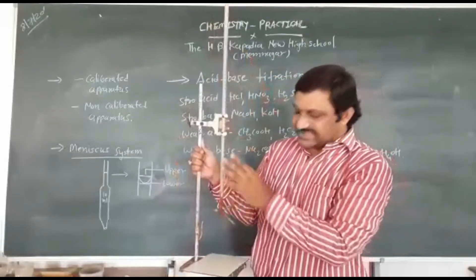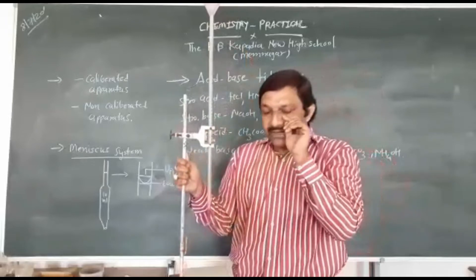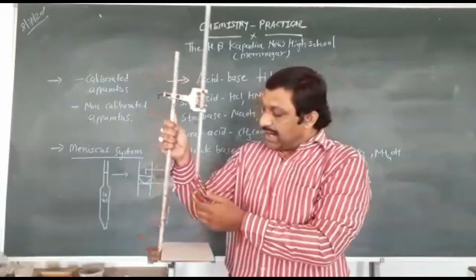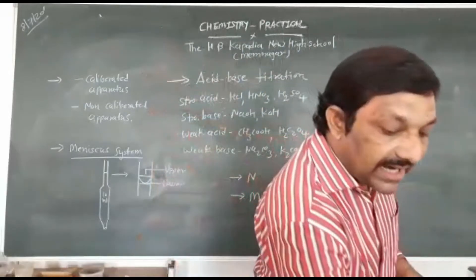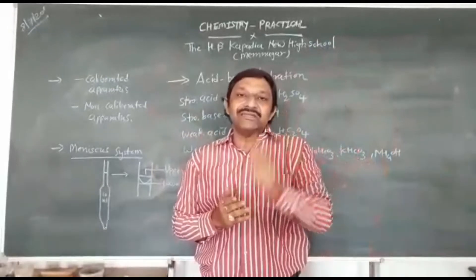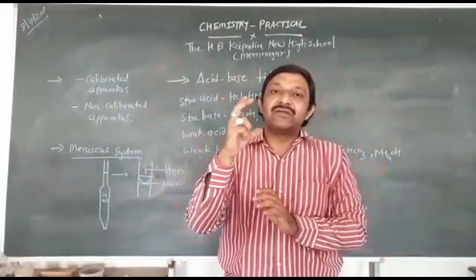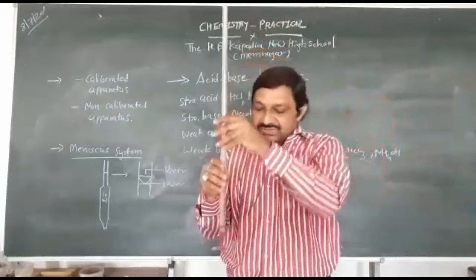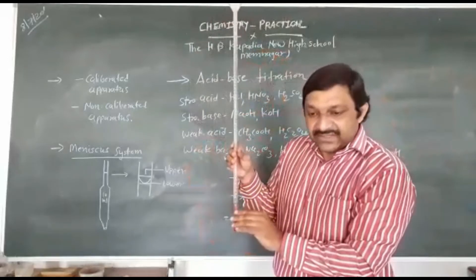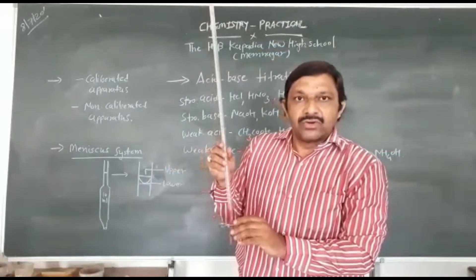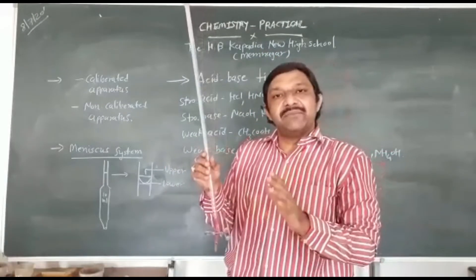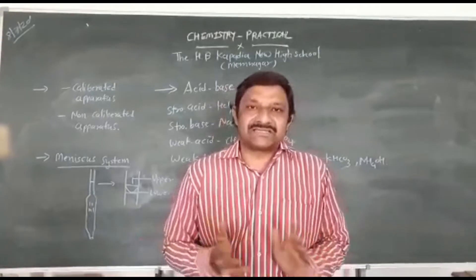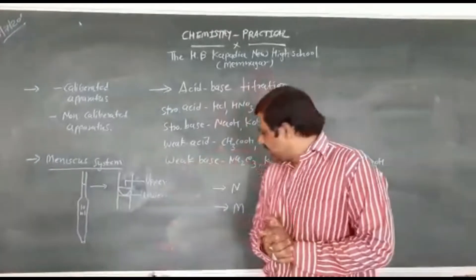The burette reads from 0 to 50 ml. In the burette there is a rubber tubing part. There are two parts of burette: one is pinch cock burette and second one is the top of burette. In the lab we are using pinch cock burette.